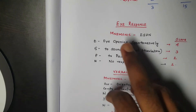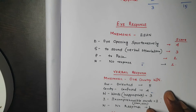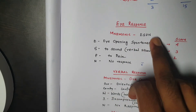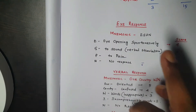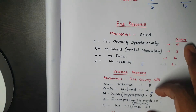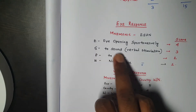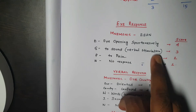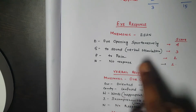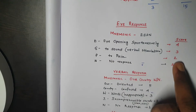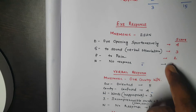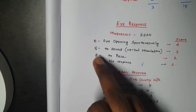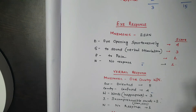For the first component, Eye response, we can memorize it using the mnemonic ESPN — a sports channel. E4: eye opening spontaneously, score 4. S: to sound, any verbal stimulation, score 3. P: to pain, score 2. N: no response, score 1. So ESPN = 4, 3, 2, 1.